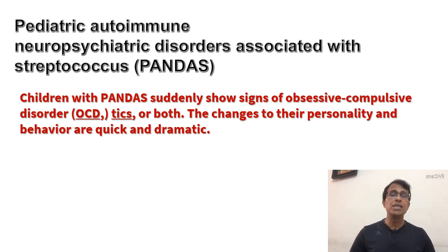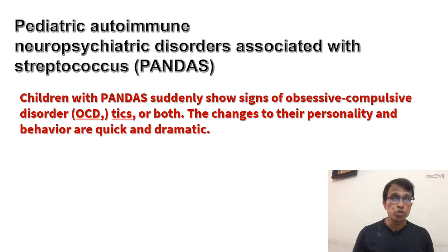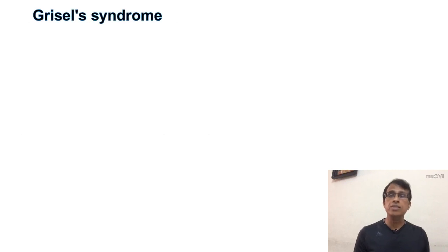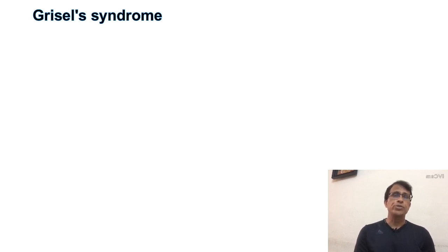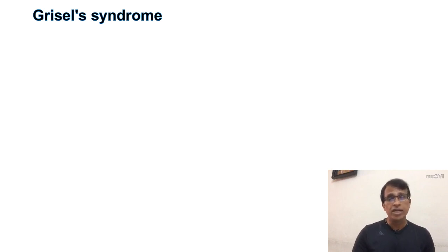The next syndrome is extremely important — Grisel's syndrome. A question was asked about Grisel's syndrome two years back in the NEET exam, so every MCQ book carries a question on it. Grisel's syndrome is a non-traumatic subluxation of the atlanto-axial joint. It is non-traumatic, so what causes the subluxation? Either an infection in the head and neck area — especially adenoiditis and tonsillitis — these are the two most common infections that can cause this syndrome and the subluxation.